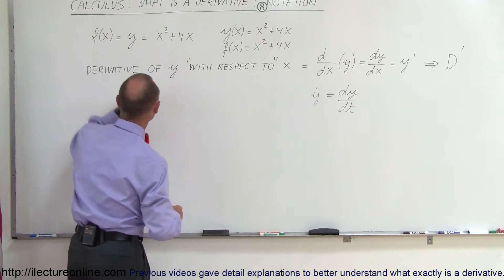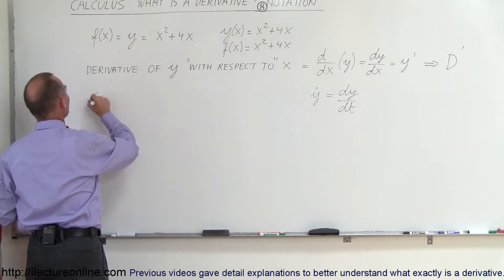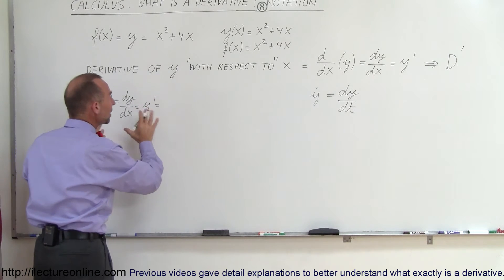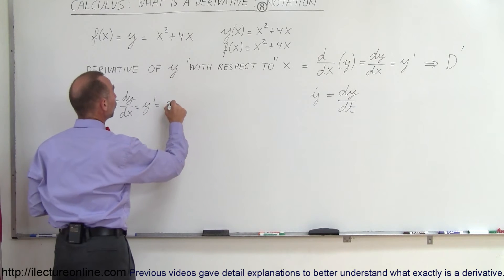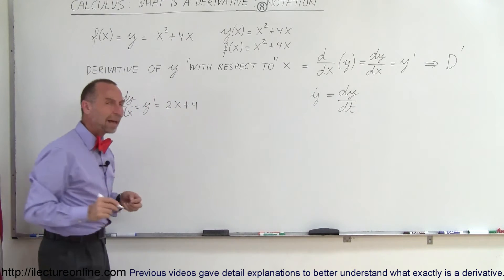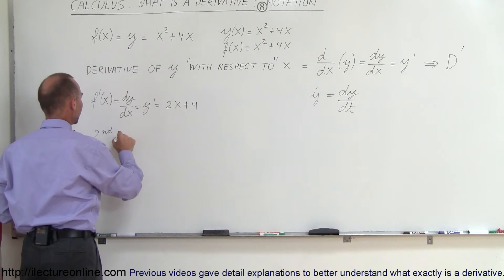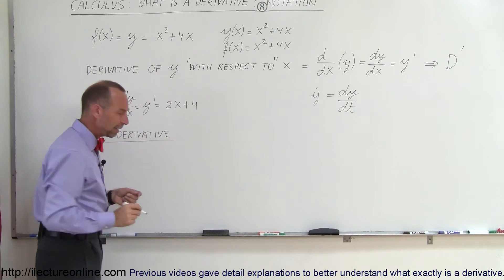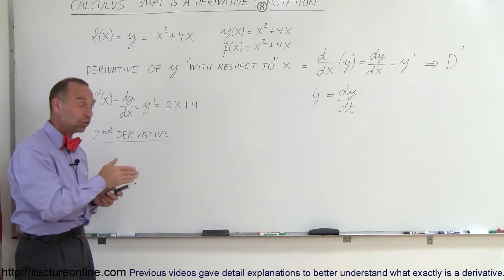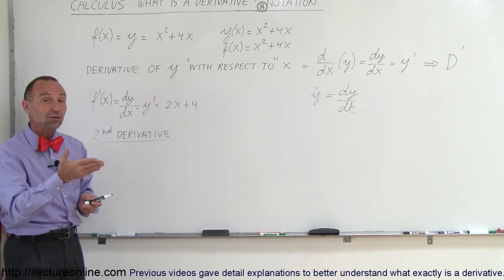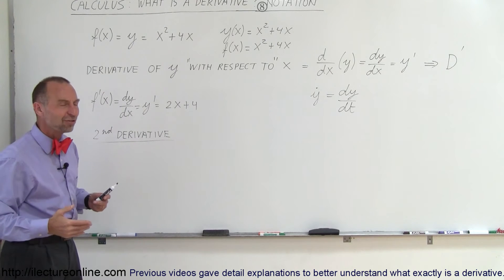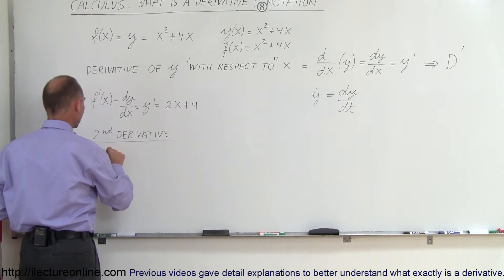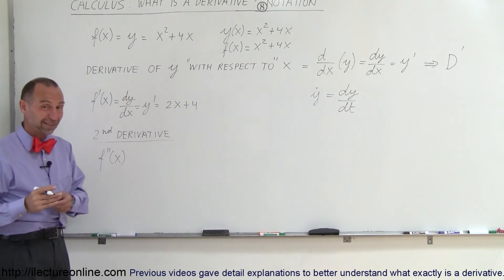Now what is the second derivative? If we write f prime of x, which equals dy/dx, which equals y prime — those are all the same thing, the first derivative — and we compute it, we get 2x plus 4. Now if I take the second derivative, the notation for that is f double prime of x; we put two tick marks there to mean the second derivative.